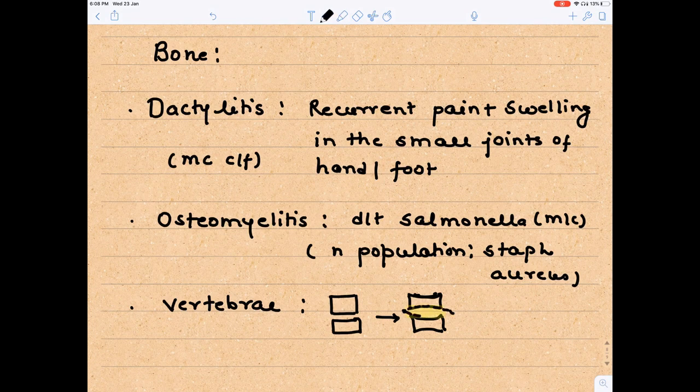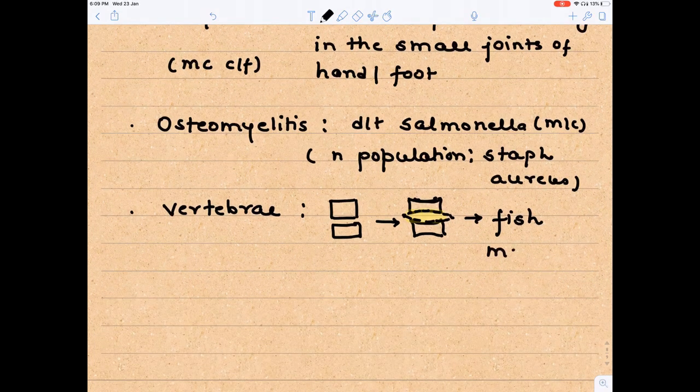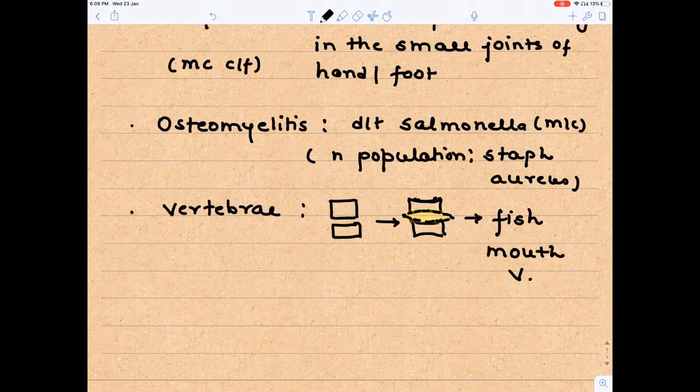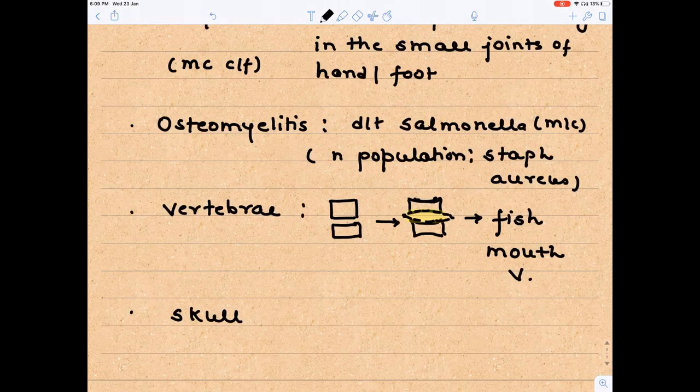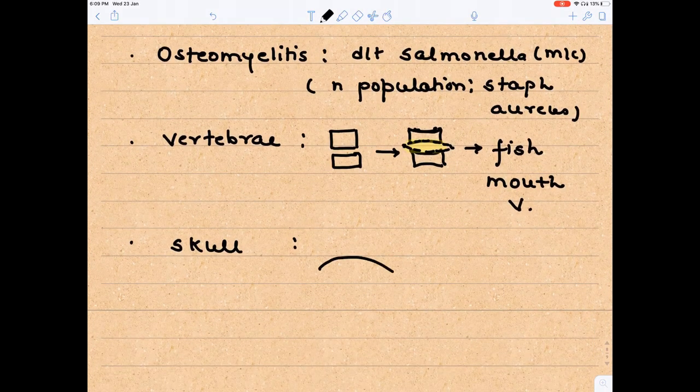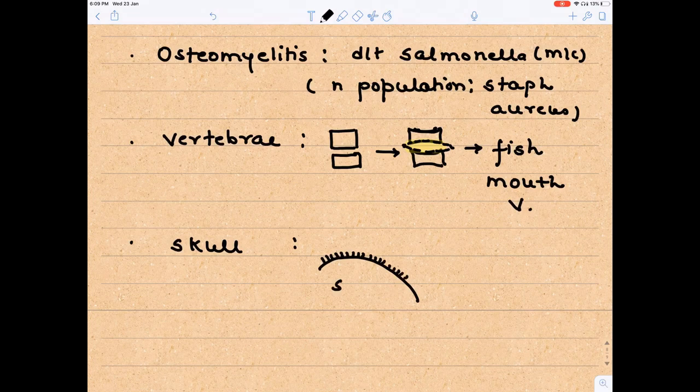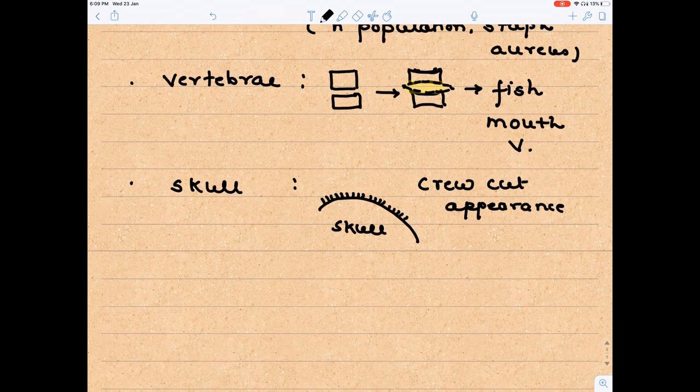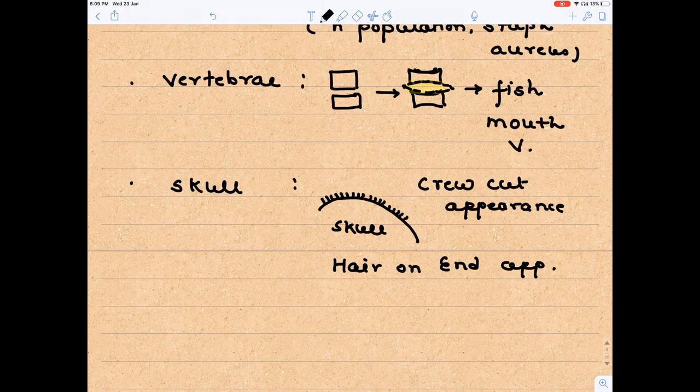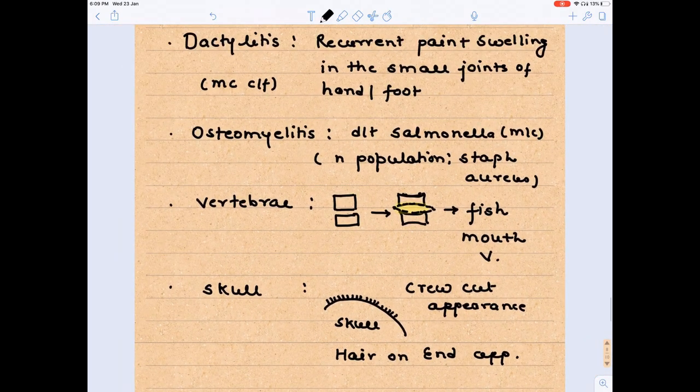Vertebra will be converted into fish mouth vertebra. This is the area you have to look for. This is the presentation known as fish mouth vertebra. Skull involvement, very important for image-based and MCQs. If you see the outer and inner table, what you will find is trabeculae which are perpendicular to the inner table. This is known as crew cut appearance or hair on end appearance, which is usually seen in hemolytic anemia affecting since childhood.